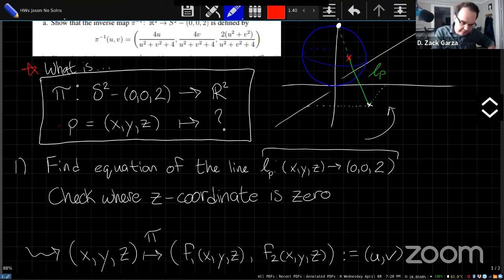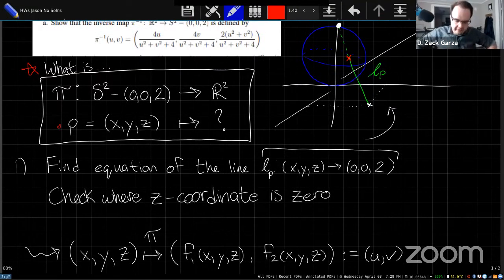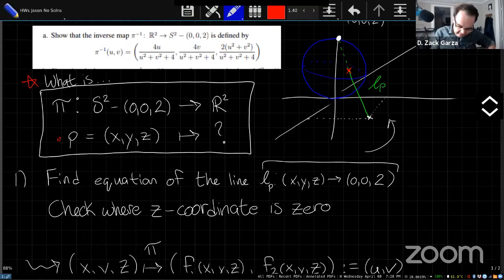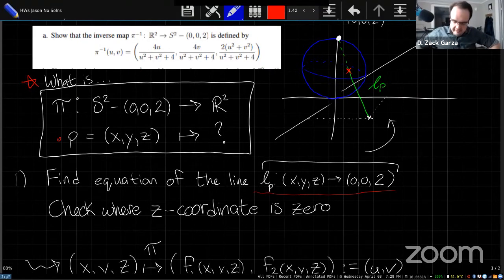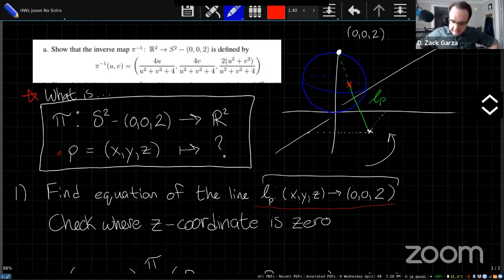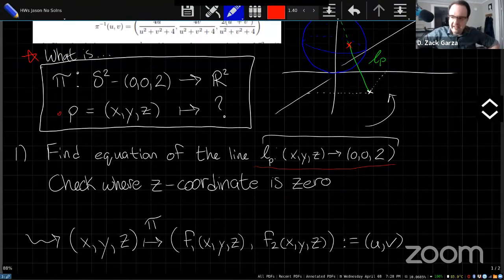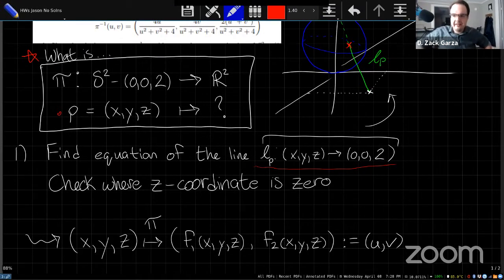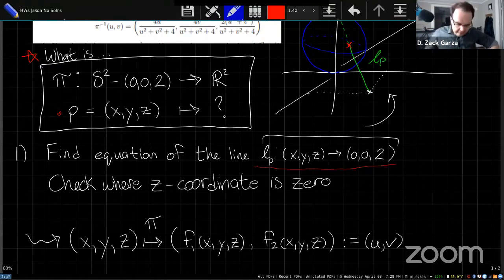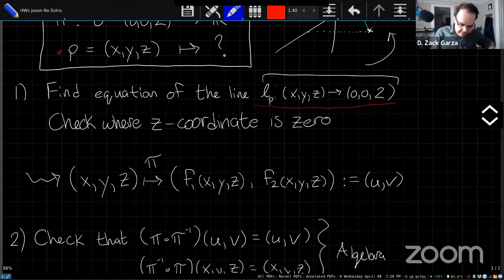So this will be something that takes a p in s² with three coordinates x, y, z, and should give you something with two coordinates. So the way I would recommend doing this is to actually find the equation of this line. I've written it as lp here. It's this line through 002 and your arbitrary point x, y, z on the sphere. And just check where this line, where the z coordinate. So when you write that parameterization of this line, you'll get a three vector, that should be a function in each component. And just check where that third component is equal to zero.